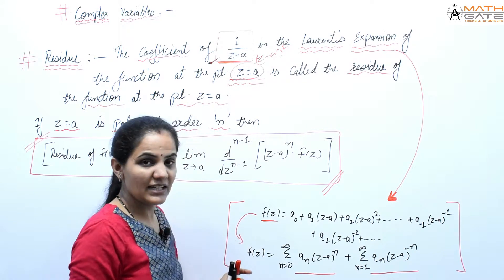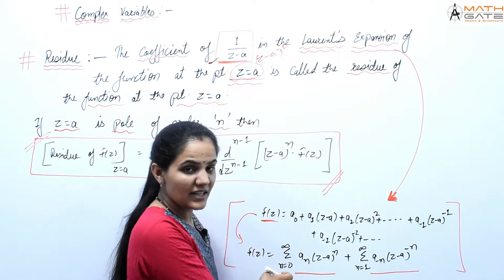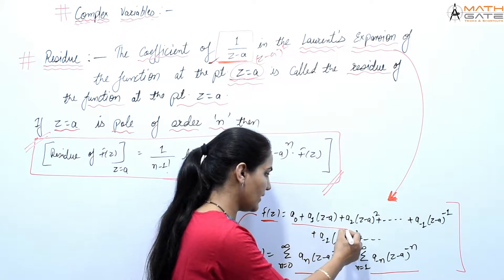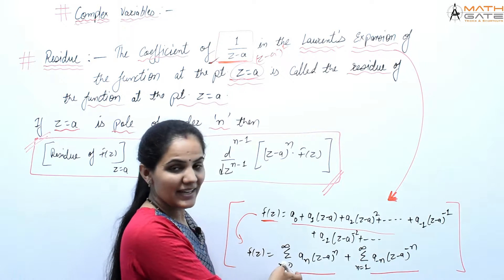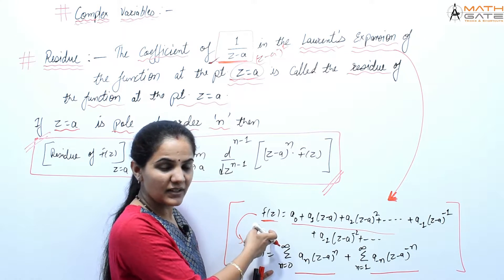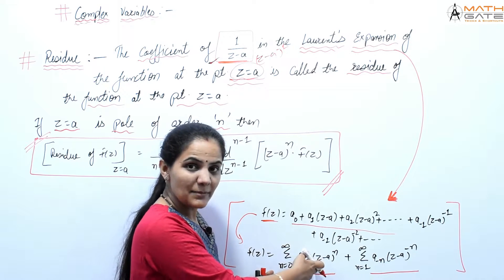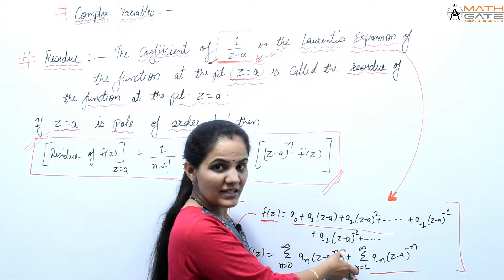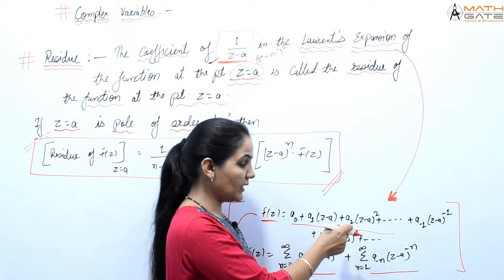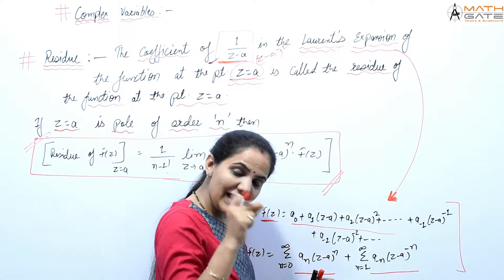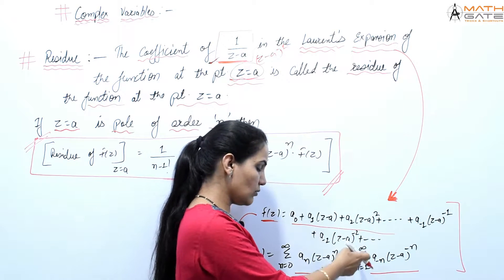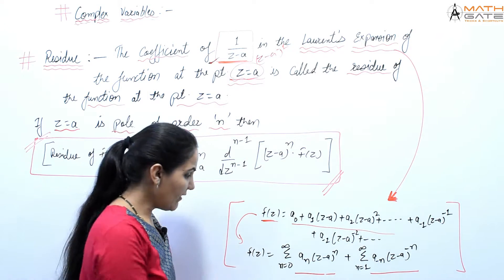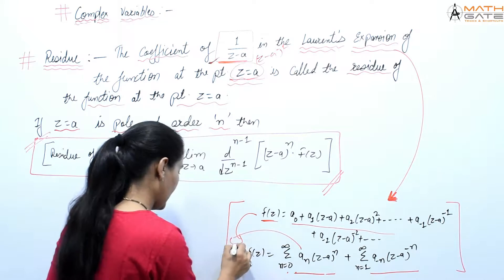We can also write this in summation form. The positive part: summation from n=0 to infinity of aₙ(z−a)ⁿ. The principal part: summation from n=1 to infinity of a₋ₙ(z−a)^(−n). The positive part is called the analytic part of the Laurent series.